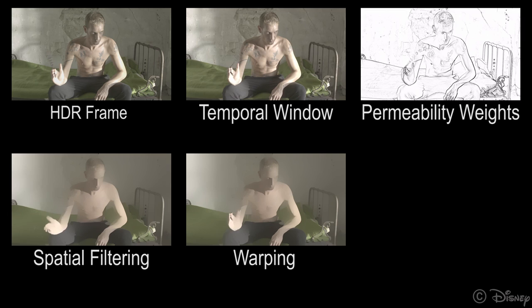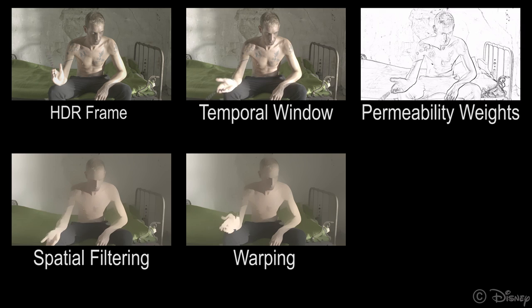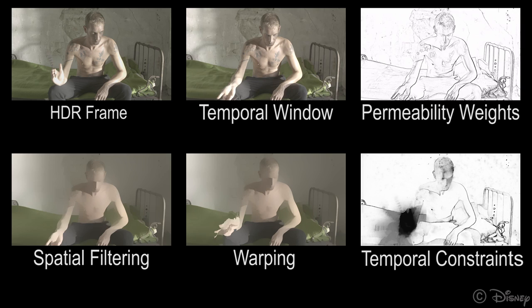Moving to temporal filtering, using the optical flow, we warp all the neighboring frames such that they are aligned with the center frame. We compute another permeability map for the temporal dimension, which prevents filtering over temporally misaligned pixels, for example near the hand of the actor. All these steps are explained in detail in our paper.